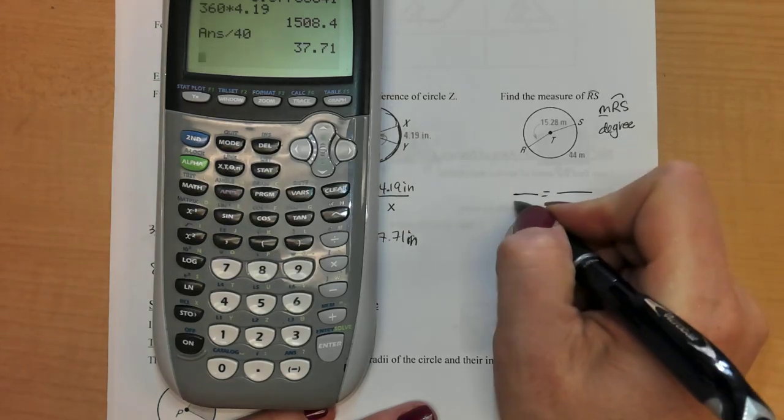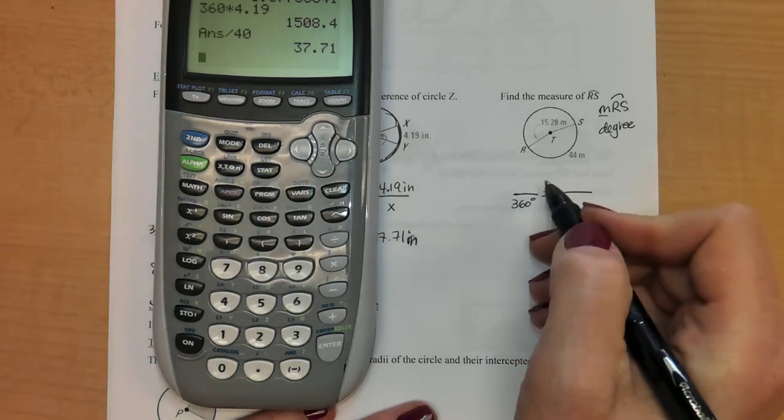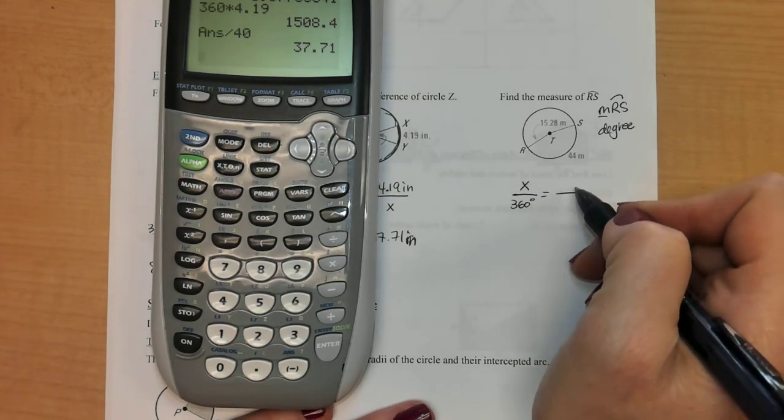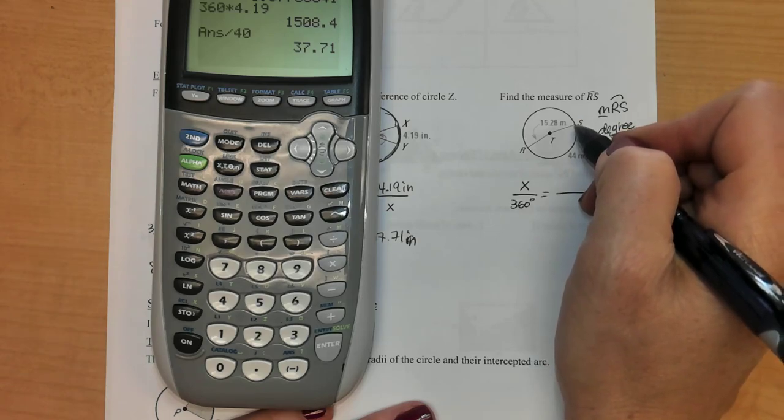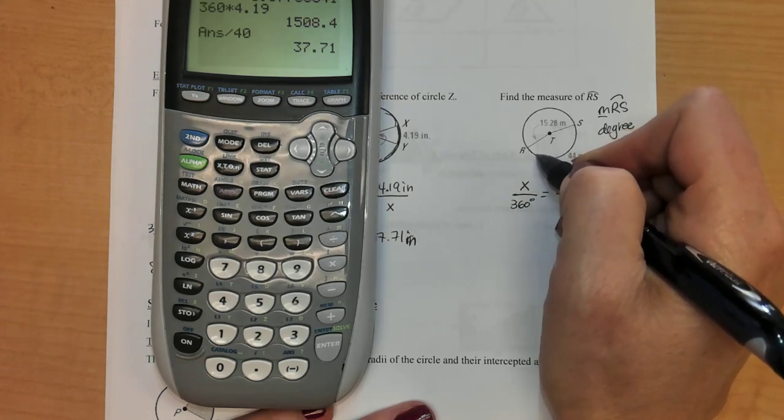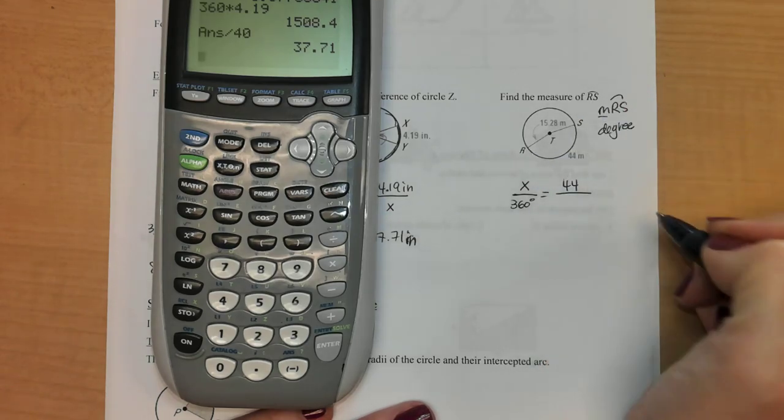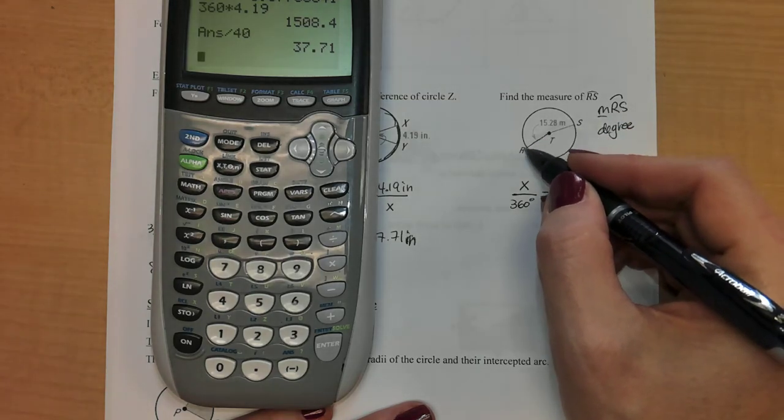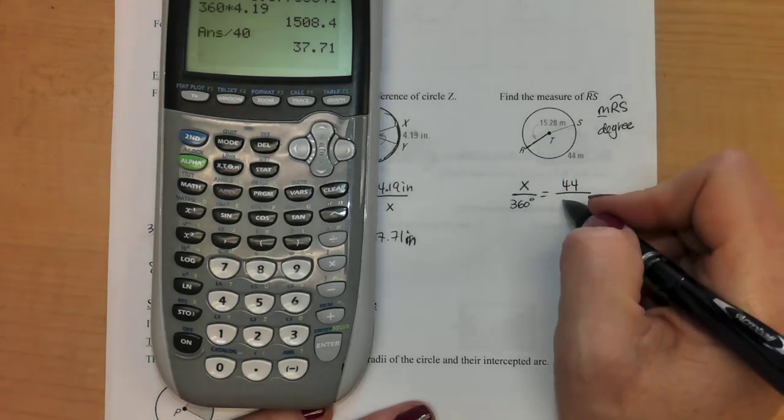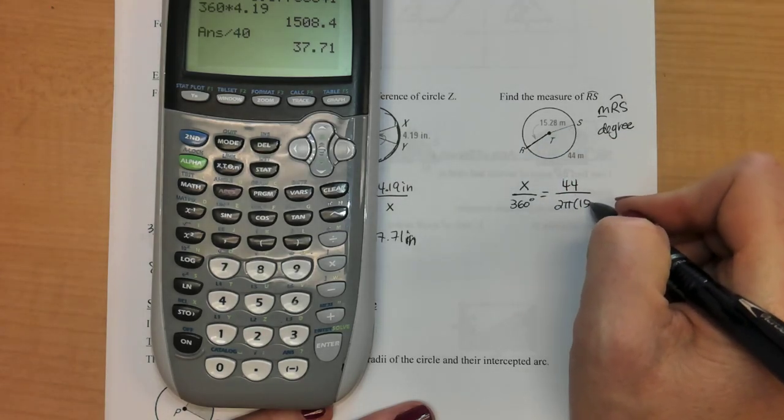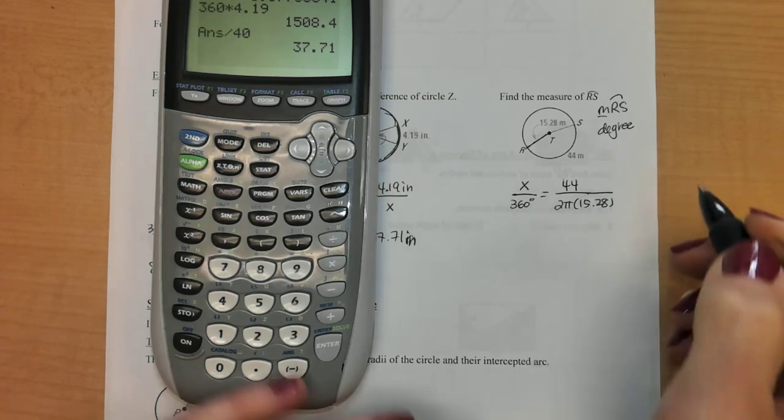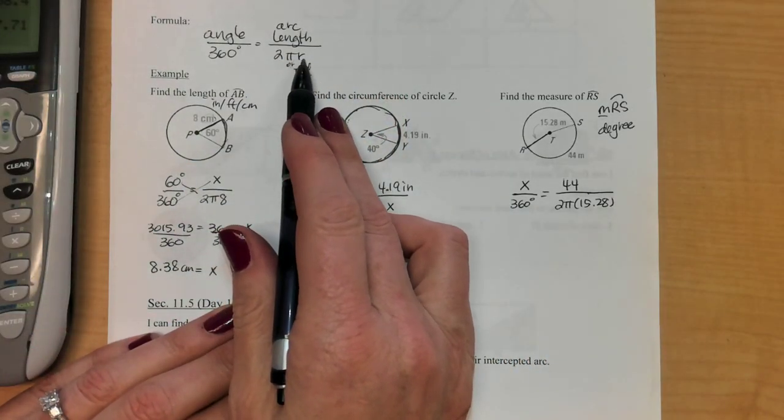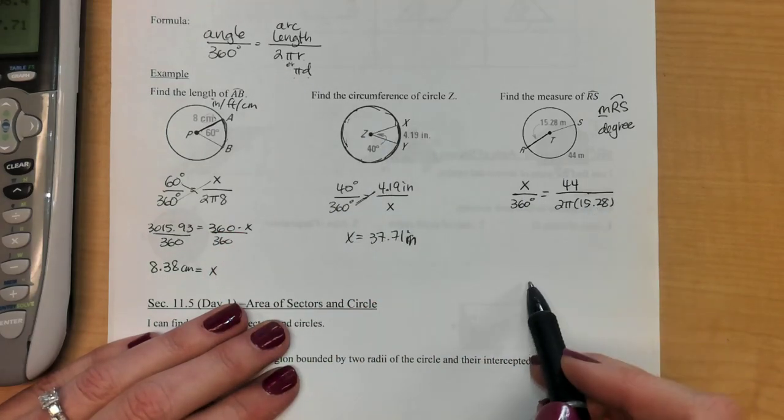So I'm going to set up my proportion. It's always over 360. I don't know the angle this time. That's what I'm trying to find. Arc length I need, they told it to me, it is 44. And then my circumference down here, I'm looking at my picture and they gave me this measure, which is a radius. So I'm going to use the radius formula, 2π times 15.28. So instead of doing π diameter, I just chose to do 2πr. It does not matter which one of these you use. That's just the one I chose.